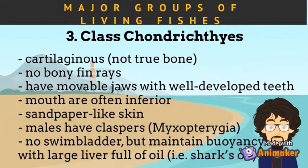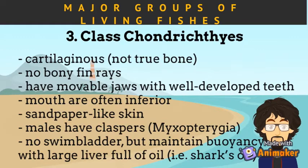Organisms under Class Chondrichthyes are also called elasmobranchs or chondrichthyans. They have a cartilaginous skeleton, meaning they do not have true bone in the skeleton. They have movable jaws armed with well-developed teeth and an inferior mouth. They have pectoral fins for swimming and rough sandpaper-like skin called placoid scales. Males have claspers while females have cloaca, a copulatory organ used for mating. They have no swim bladder, but maintain buoyancy with a large liver full of oil — i.e., shark's oil.